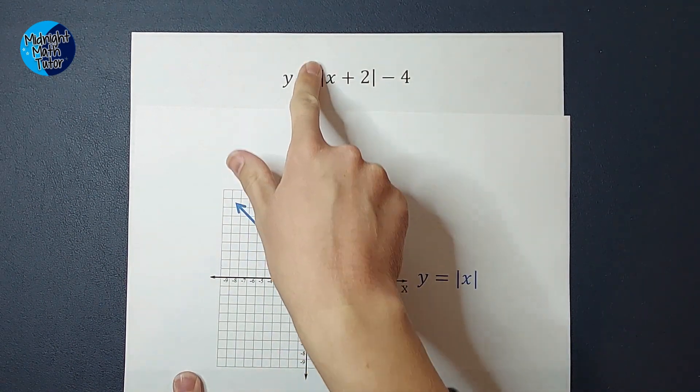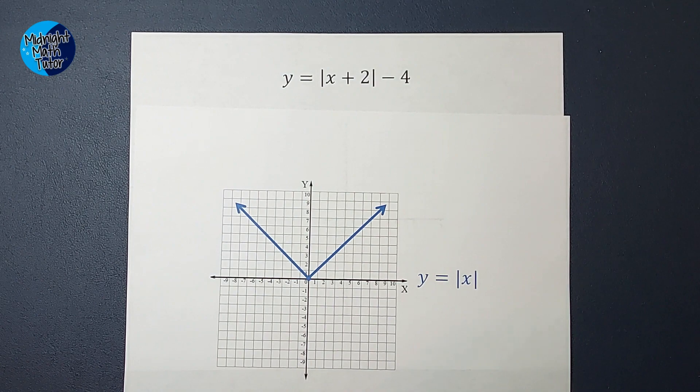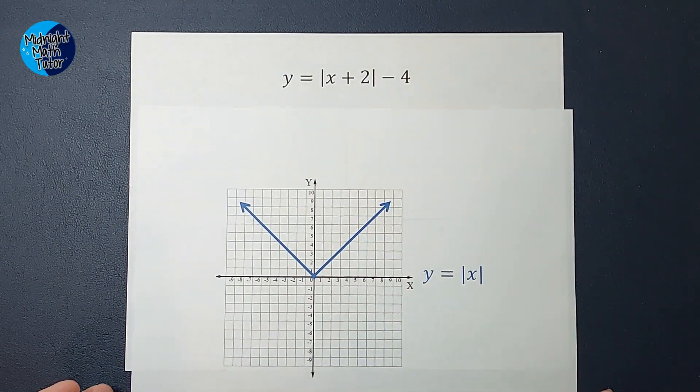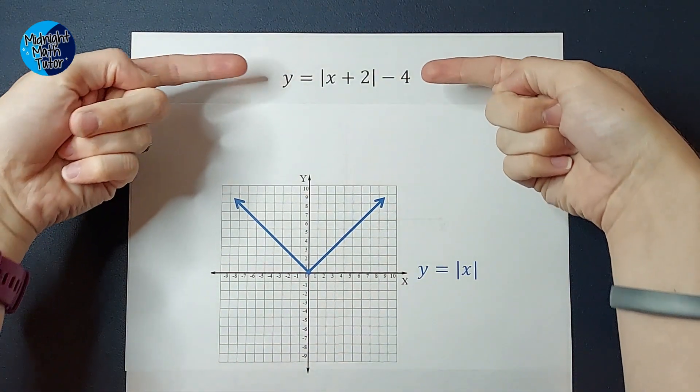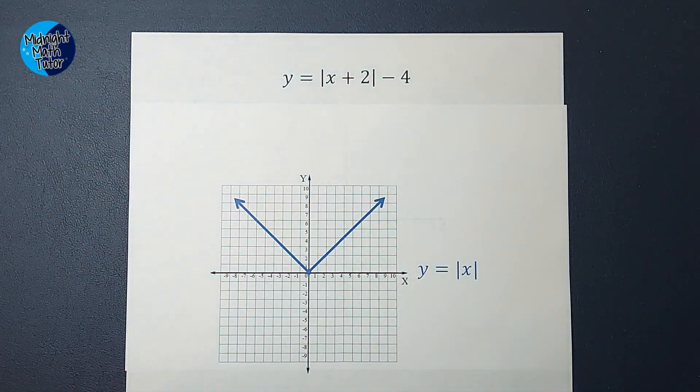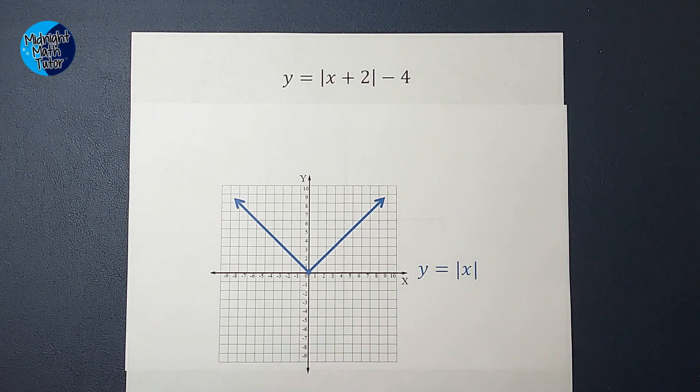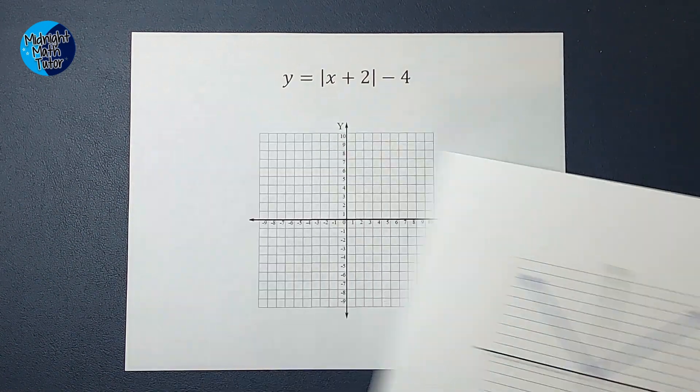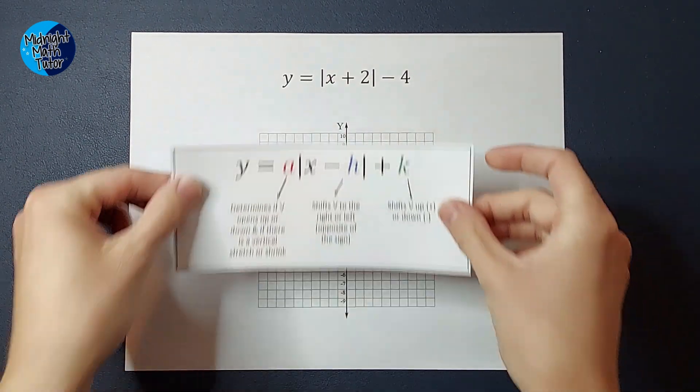There might even be a number out front here. So what do we do then? Well, the cool thing about this is the graph for this is going to look very similar to this graph. It's just going to be moved around a little bit. So let's see how we determine what happens to it.